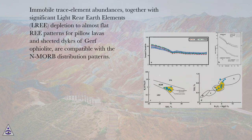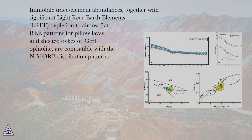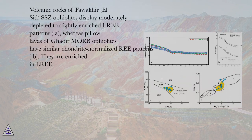Immobile trace element abundances, together with significant light rare earth element (LREE) depletion to almost flat REE patterns for pillow lavas and sheeted dykes of ophiolite, are compatible with N-MORB distribution patterns. Volcanic rocks of Fawakhir (L-SID) SSZ ophiolites display moderately depleted to slightly enriched REE patterns.